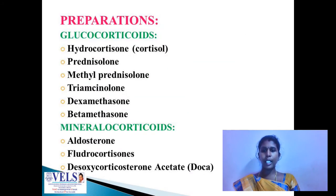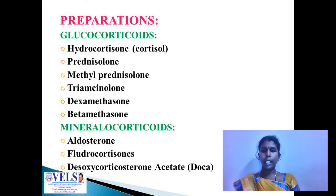Glucocorticoids and mineralocorticoids have different types of preparations. Examples of glucocorticoids include hydrocortisone, prednisolone, methylprednisolone, dexamethasone, and betamethasone. Examples of mineralocorticoids include aldosterone, fludrocortisone, and DOCA — which stands for desoxycorticosterone acetate.